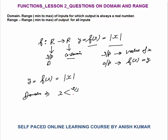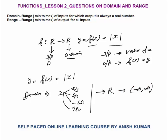I can put x as minus 2 by 3 — it is also valid. I can put x as 5 by 7, minus 560, or 780. So all values of x are valid. The domain of this function will be the set of real numbers R, or you can say minus infinity to infinity. You can put all possible values in the real number set. So that is the domain of y = mod x.